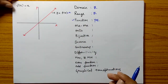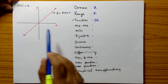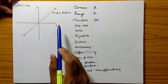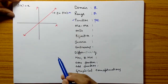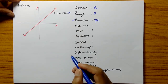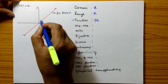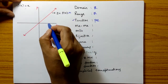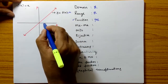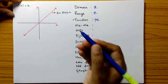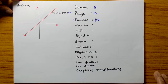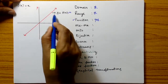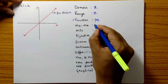Is it a one-to-one function? The definition of a one-to-one function is: different elements in the domain set have different images in the co-domain set. We use the shortcut of drawing a horizontal line. If the horizontal line cuts the graph at only one point, the function is one-to-one. If it cuts at two points, it is not one-to-one. Here, it cuts at only one point, so it is a one-to-one function.